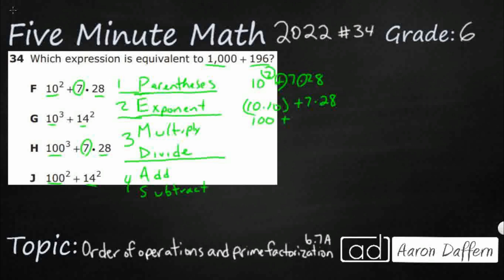Plus, and then I need to do 7 times 28. Okay. Well, I got the 196 on F right here. But I didn't get the 1000. I got the 100. So that looks like a no. Let's check G.